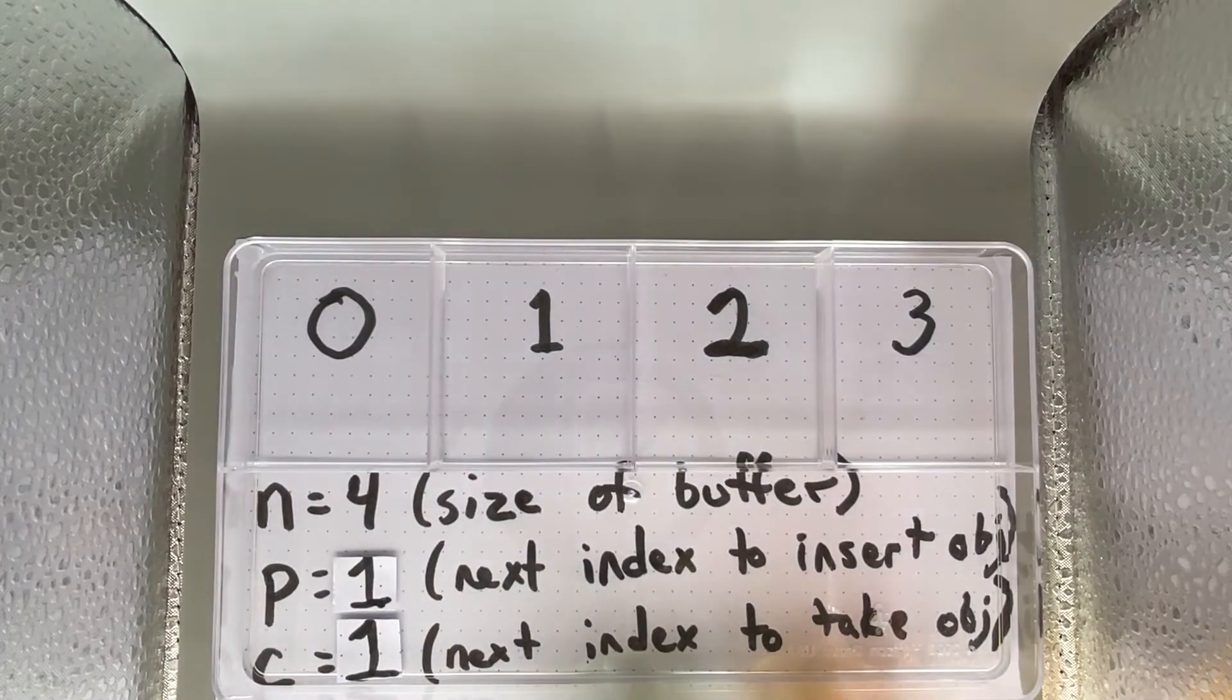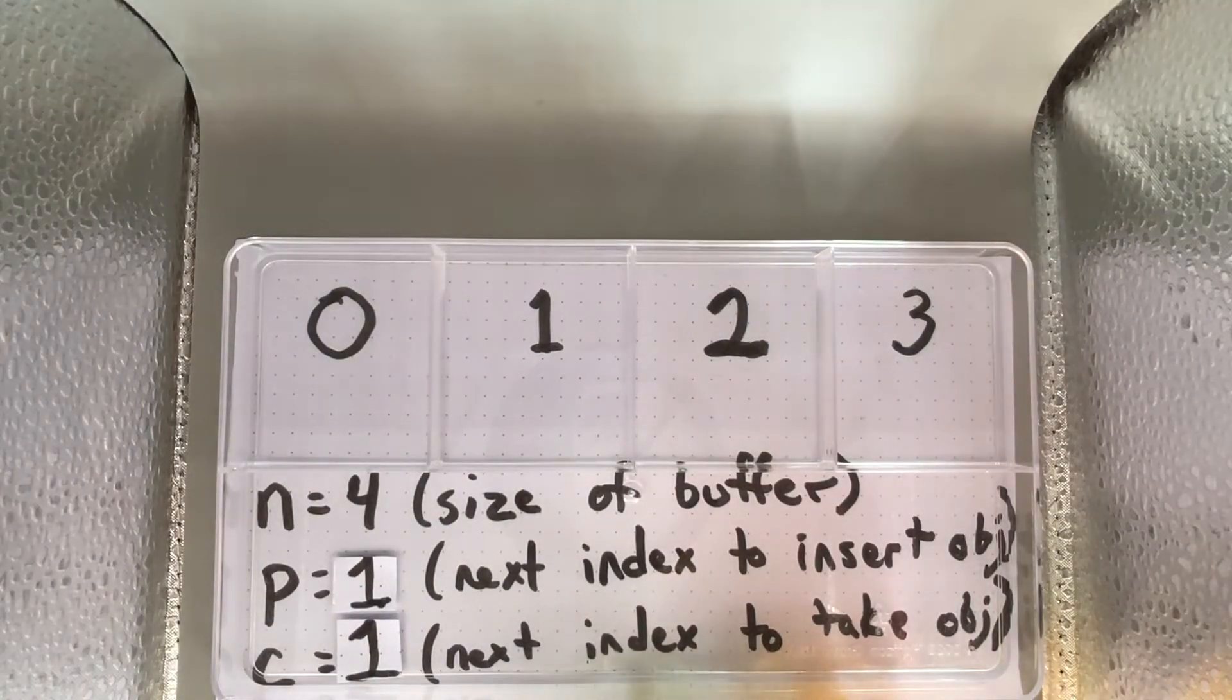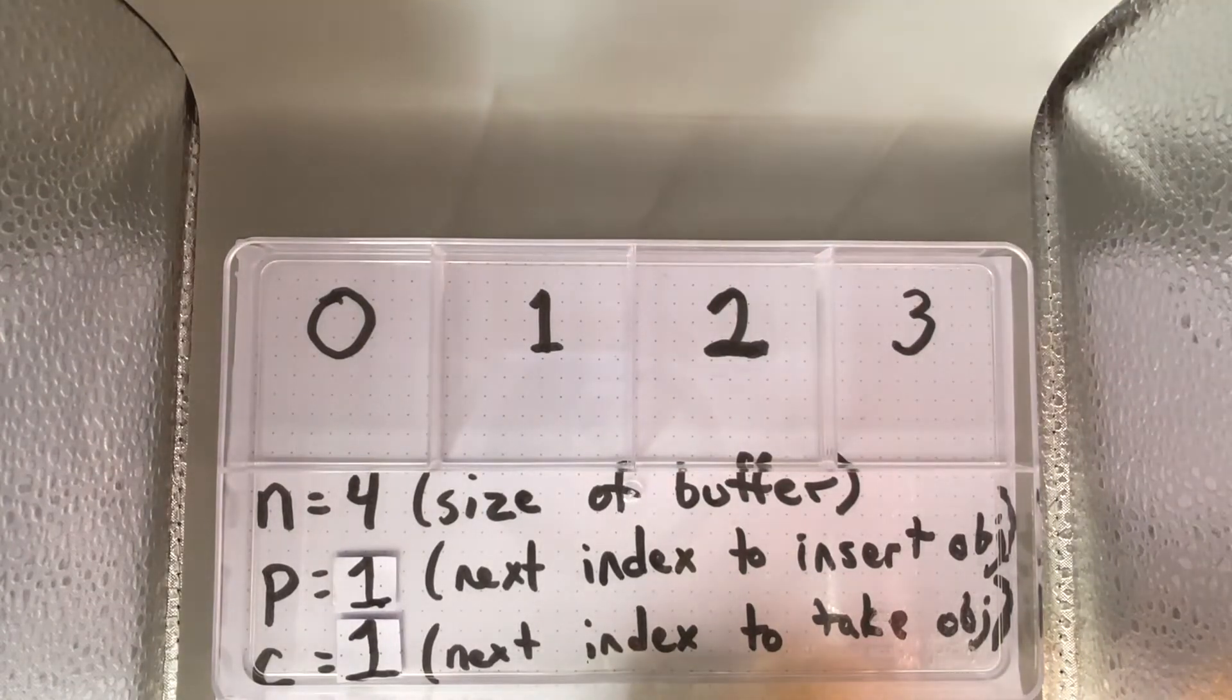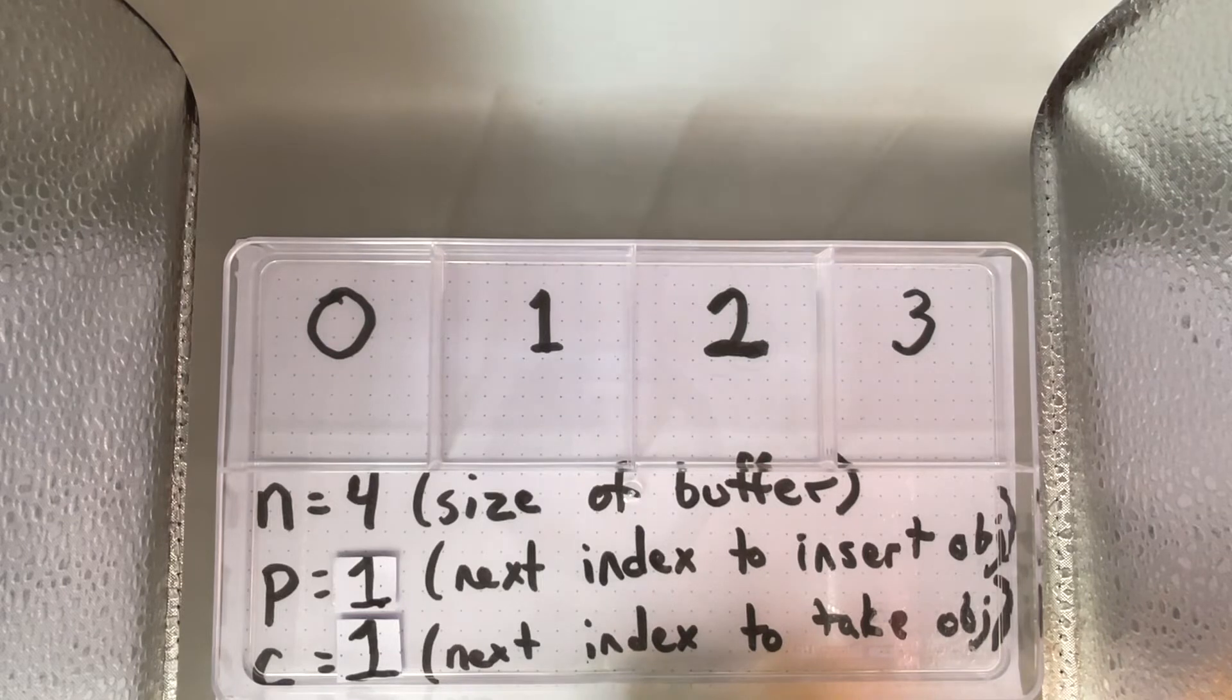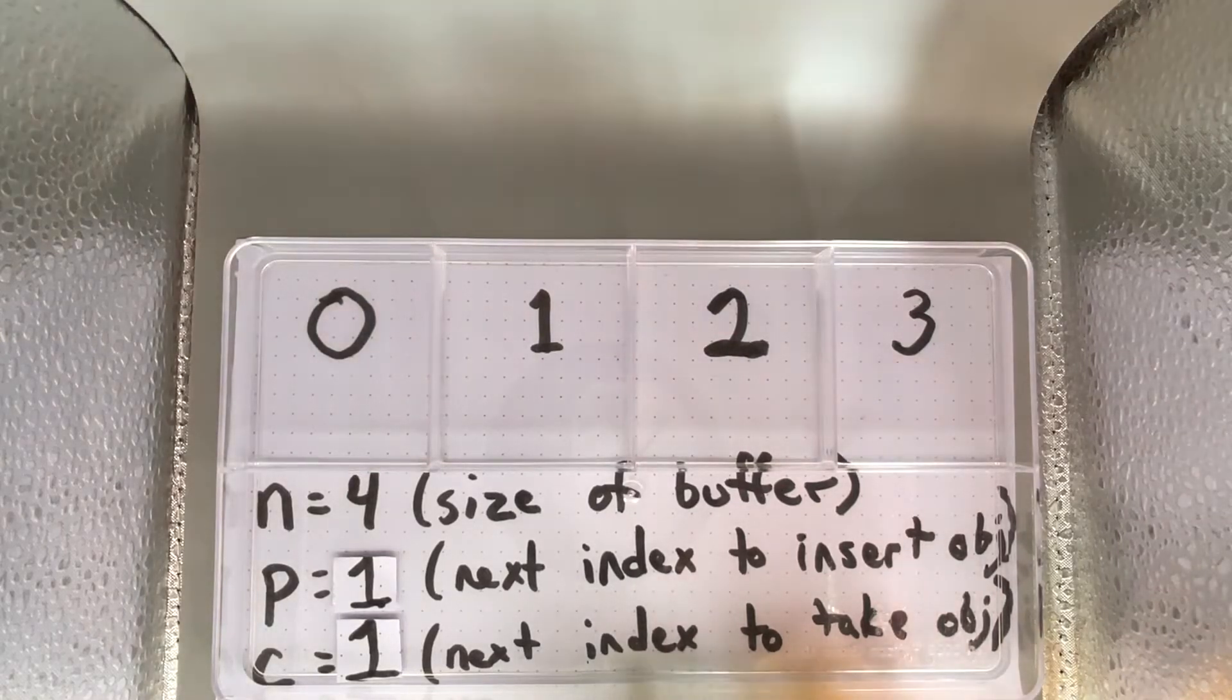One conclusion we can make here is that if p and c are equal, then the buffer itself is empty and there is nothing there for the consumer to take. So the consumer should only be able to take if the buffer is not empty.